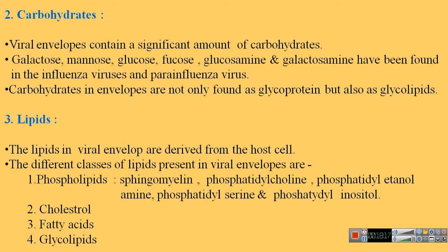Within the viral envelope there is a significant amount of carbohydrates. The most common carbohydrates are galactose, mannose, glucose, fucose, glucosamine, and galactosamine, generally found in influenza viruses and parainfluenza viruses. Carbohydrates in the envelope are found not only as glycoproteins but also as glycolipids — meaning carbohydrates within the viral envelope are always associated with proteins or lipids.